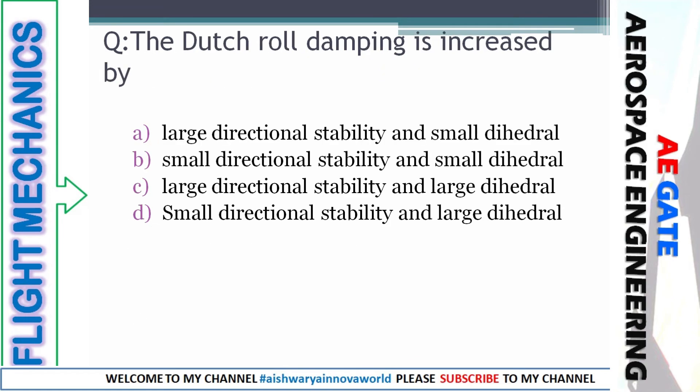Final question: Dutch roll damping is increased by — lateral directional stability and small dihedral; larger directional stability and small dihedral; larger directional stability and large dihedral; or small directional stability and large dihedral. From previous questions we know that to improve roll, we need high dihedral. So if Dutch roll damping is being increased, we need small dihedral and directional stability should not be too large — so the right answer is option A.